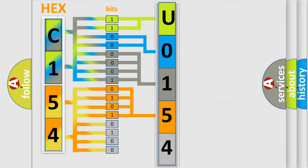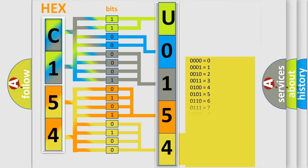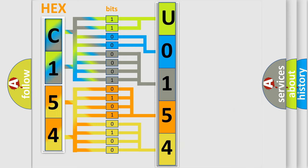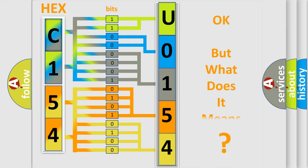A single byte conceals 256 possible combinations. We now know in what way the diagnostic tool translates the received information into a more comprehensible format. The number itself does not make sense to us if we cannot assign information about what it actually expresses.